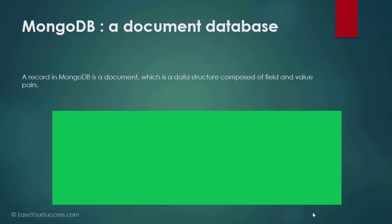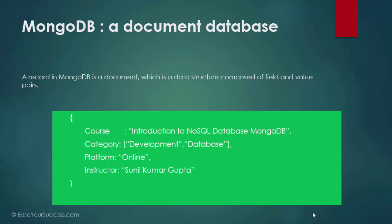MongoDB is a document database. A record in MongoDB is a document, which is a data structure composed of field and value pairs. This is the format of a document in MongoDB — we store a document in opening and closing braces. For example, 'course' is a field and its value is 'Introduction to NoSQL Database.' For the 'category' field, we can store an array like ['development', 'database']. In a MongoDB document, we can store arrays, embedded documents, integers, characters, strings, and even images — anything in the field.